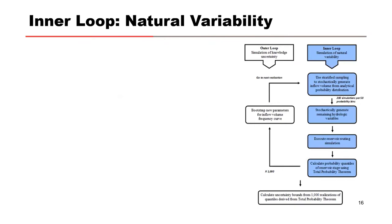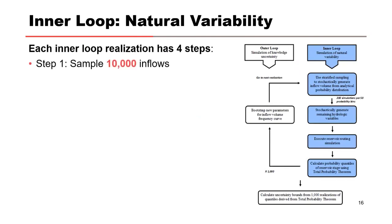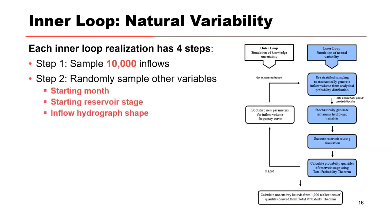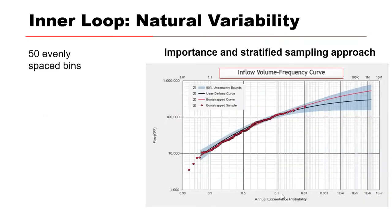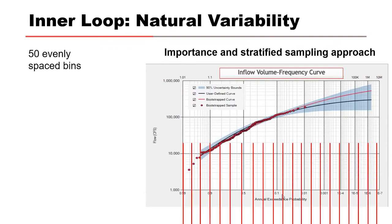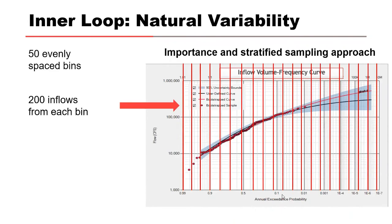The inner loop procedure simulates natural variability uncertainty in flood events. For each bootstrapped inflow volume frequency curve, an inner loop realization is run with four steps: use stratified sampling to get 10,000 inflows; randomly sample other hydrologic variables including starting month, starting reservoir stage, and inflow hydrograph shape; scale the inflow hydrograph to the sample volume and simulate reservoir routing to compute a peak stage; and calculate the probability of stages using the total probability theorem. RFA uses an importance and stratified sampling approach, applying 50 evenly spaced bins along the probability axis and sampling 200 inflows from each bin, for 10,000 total.